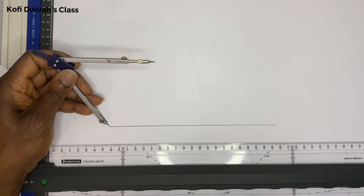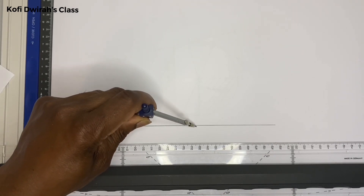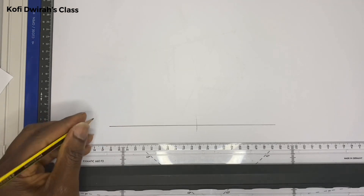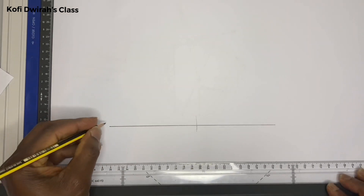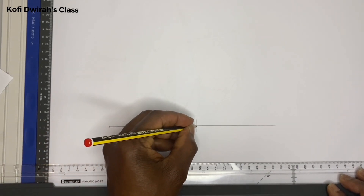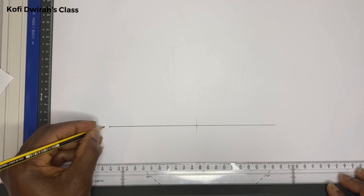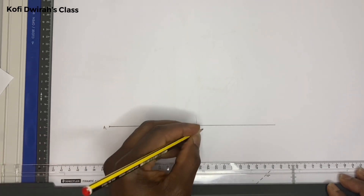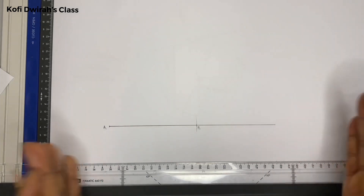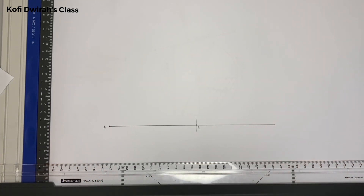I can use this point to be point A, then you mark point B. So I have point A which is here and point B. You can just leave this line. Then we have angle ABC which is 60 degrees.